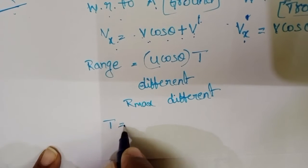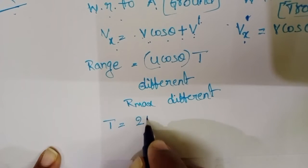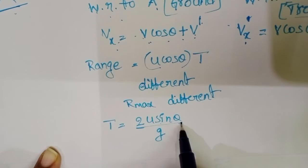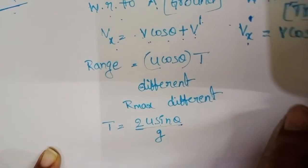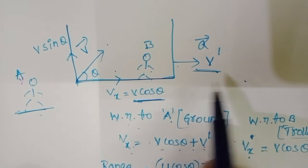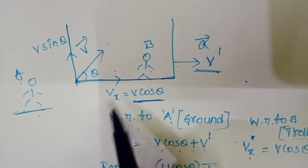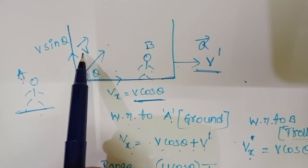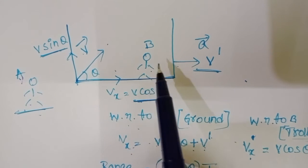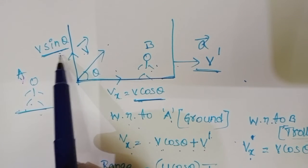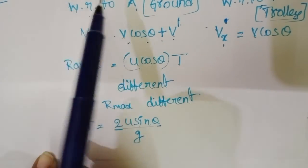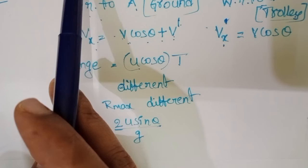Time of flight equals 2u sin theta divided by g, where u sin theta is the vertical component of velocity. The trolley moves only along the horizontal direction — there is no velocity of the trolley along the vertical direction. So the vertical component of the particle is v sin theta. Either relative to ground or relative to the trolley, the vertical component of velocity remains constant, so time of flight is constant.